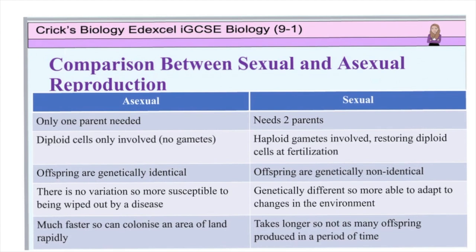Looking at a summary of asexual versus sexual reproduction, there are advantages and disadvantages of both. Asexual only requires one parent, so if a plant has landed in a new area where there are no other plants it can still reproduce. It is quick so the plants can colonise the area rapidly, but they are more susceptible to disease due to lack of genetic variation. Sexual reproduction, on the other hand, requires two parents and each parent produces sex cells or gametes which contain half the normal number of chromosomes. When fertilisation occurs each parent contributes half the genetic information, leading to variation which means the plants are more able to adapt to changes in the environment. But sexual reproduction takes much longer, which means it does not allow them to colonise new areas of land easily.